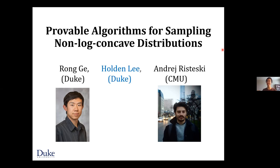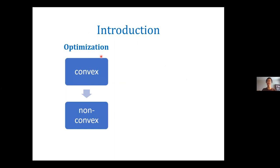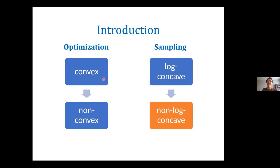I'll start with an analogy between optimization and sampling. Recently there's been a lot of progress in understanding optimization beyond convexity. However, optimization is only one of the basic algorithmic primitives in machine learning. Another important one is sampling, which is especially important for inference. Similarly to optimization, the analog of convex optimization is log-concave sampling, and it's also difficult to move beyond the log-concave case. Log-concavity, like convex functions, fails to capture many real-world problems — it can't model features like multi-modality, manifold structure, and so on.